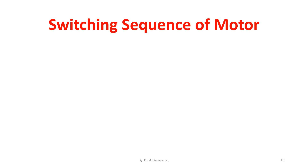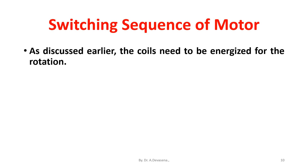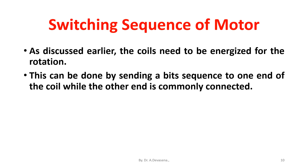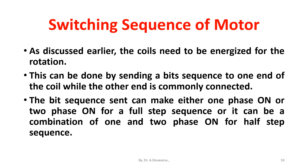Switching sequence of motor: as discussed earlier, the coils need to be energized for the rotation. This can be done by sending a bit sequence to one end of the coil while the other end is commonly connected. The bit sequence sent can make either one phase on or two phase on for a full step sequence, or can be a combination of one and two phase on for a half step sequence.